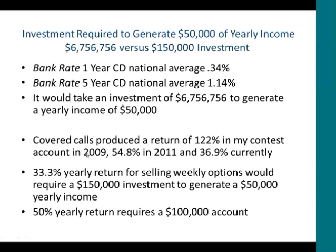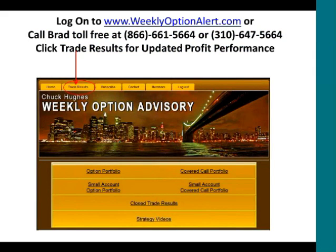Contrast that with covered calls: 122% return in 2009, 54% in 2011, 36% recently. Assuming a realistic 33.3% yearly return from selling these weekly options, it would only require a $150,000 investment to generate $50,000 of yearly income — compared to $6.7 million in CDs. That shows the disparity between fixed income investments today versus selling these weekly call options. If you achieved a 50% yearly return, it would require only a $100,000 account to generate $50,000 of yearly income.